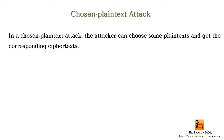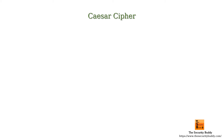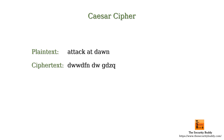For example, in the Caesar cipher, an attacker gets to select the plaintext 'attack at dawn' and gets the corresponding ciphertext. The attacker can then analyze the plaintext-ciphertext pair, get the mapping of a plaintext letter with its corresponding ciphertext letter, and from that easily deduce that the secret key is 3.